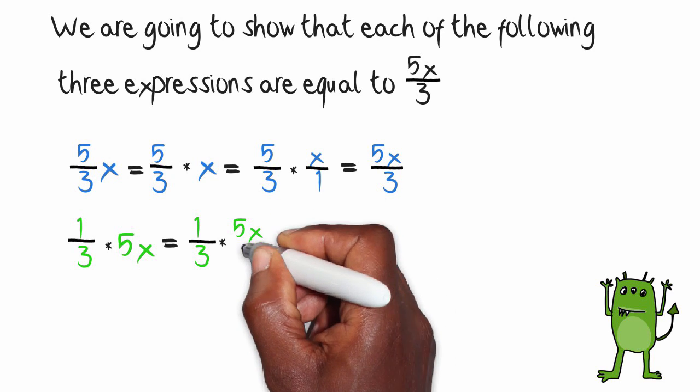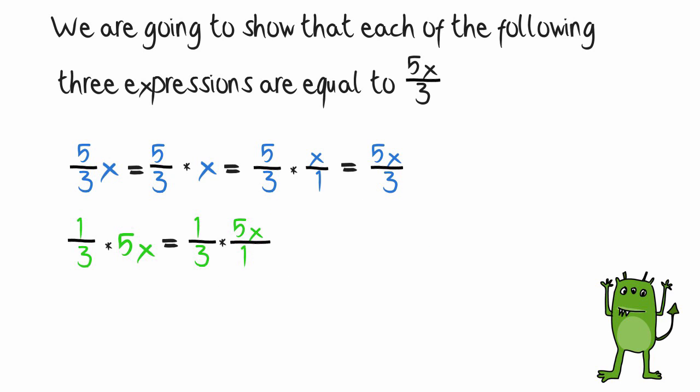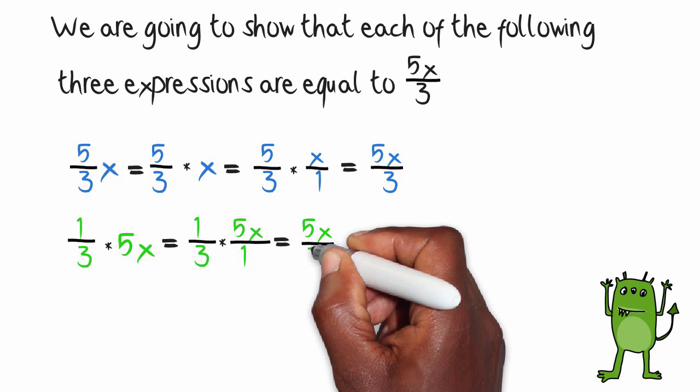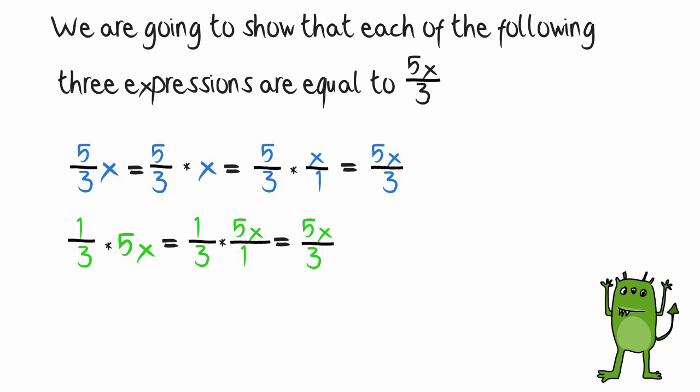We're going to make that 5x, 5x over 1. Now we have 1 times 5x, which is 5x. 3 times 1 gives me 3. I now have the fraction 5x over 3.